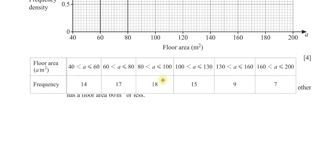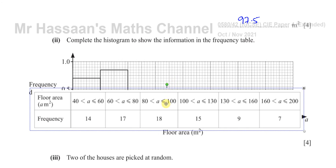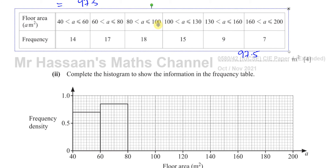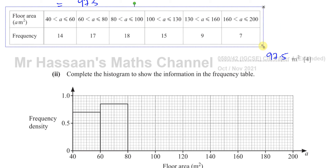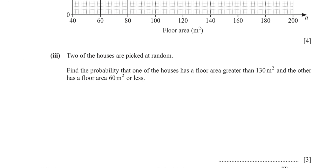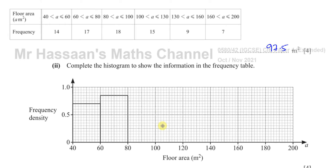Frequency histograms are used especially when you have continuous data where the intervals are not the same — and we can see here the intervals are not the same. The frequency density is equal to the frequency divided by the class width. Looking at the intervals: 40 to 60 is a width of 20, and the next two intervals are also 20, but then it becomes 30, then 30, then 40.